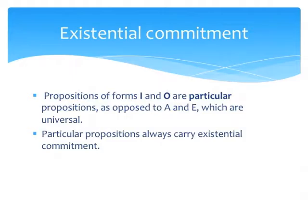Remember that categorical propositions are divided into those that are universal and those that are particular. Propositions of forms I and O — that is, those that begin with 'some' — are particular propositions, as opposed to A and E, which are universal. On anybody's view, particular propositions are always going to carry existential commitment. That is, for a particular proposition to be true, the subject term must be non-empty; the class must have at least one member.